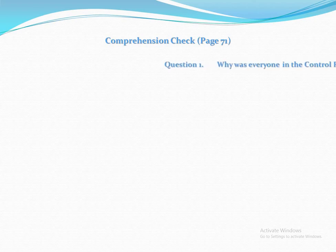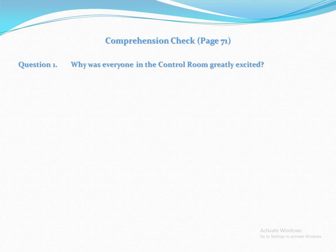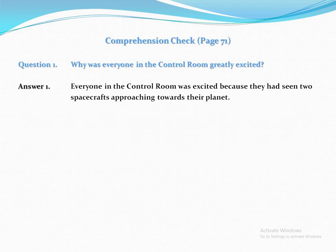Let's go to comprehension check number 2, written on page number 71. The first question is: Why was everyone in the control room greatly excited? The answer is: Everyone in the control room was excited because they had seen two spacecrafts approaching towards their planet.